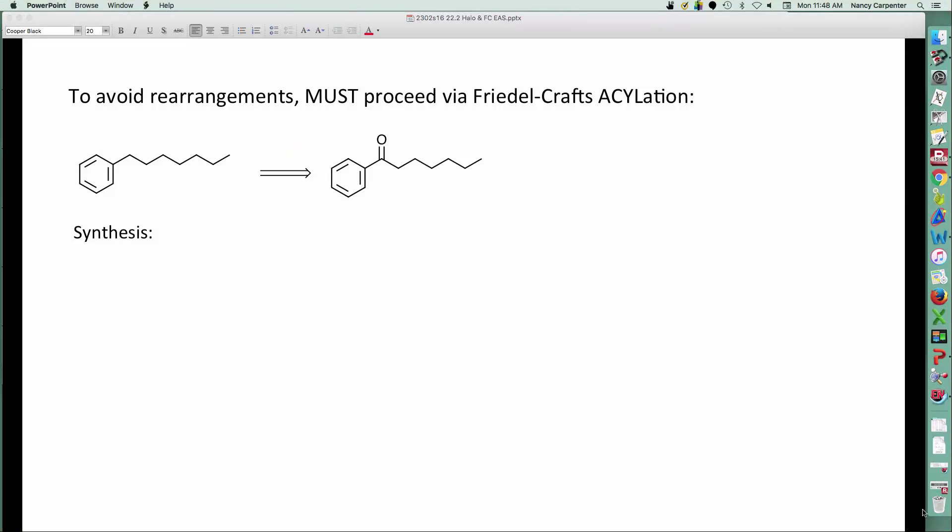So, how do I do Friedel-Crafts acylation? Piece of cake. All I have to do is add the acyl chloride, the acid chloride, to my benzene. And it's the same sort of deal. I need something to activate the chlorine leaving group, so I'll use, again, aluminum trichloride. It's just the most common Lewis acid that's used. But you could use PCl3. You could use any number. You could use iron chloride. You name it. Generally, you heat these things up to a ridiculous temperature, reflux it for several hours, and then, at the end of the day, you have this rock-solid product.